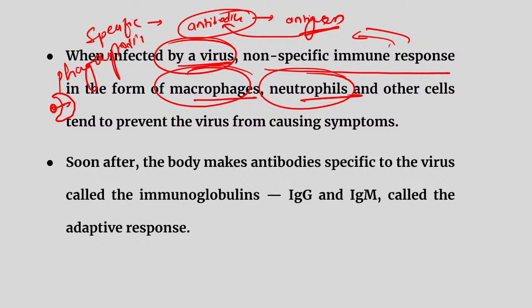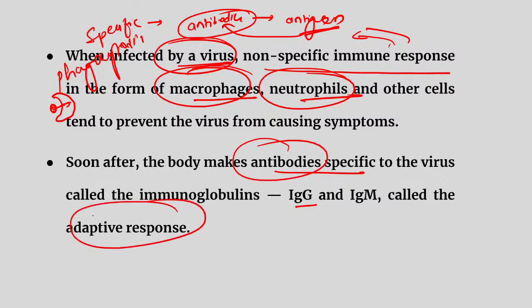Specific antibodies activate only for their specific antigen. The body makes antibodies specific to the virus — called immunoglobulins (IgG, IgM, etc.). These different antibodies are part of what we call the adaptive response — important for prelims. If a technical science question appears, this is what will be tested.